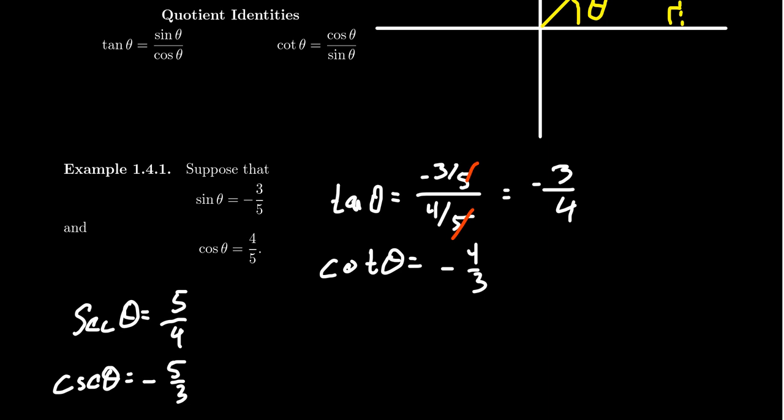So because of this perspective, it turns out sine and cosine are the most important of the six trigonometric ratios.